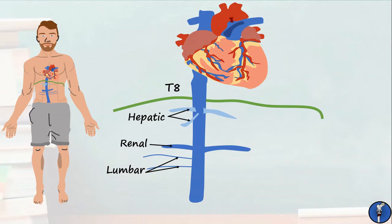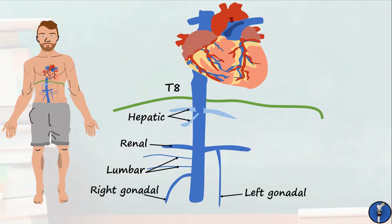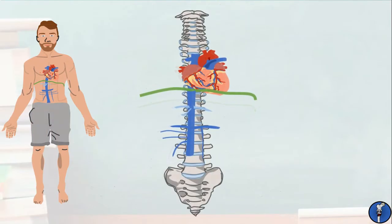Lastly, there are two veins that start in the abdomen and pass inferiorly to drain the testes or ovaries. These are the right and left gonadal veins, where the right drains directly into the vena cava and the left drains into the left renal vein. A higher chance of compression of the left gonadal vein means varicoceles are more likely to occur on the left testis or ovary compared to the right. Here's how the inferior vena cava sits in relation to the vertebral column.